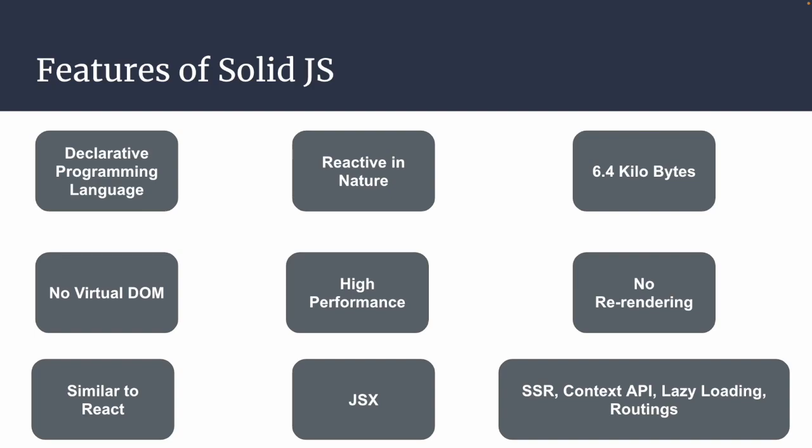SolidJS looks like React in terms of how you write code, and it takes motivation from hooks. There are no class components — only functional components with hook concepts. It has its own hooks that help make applications simple with high performance. It uses JSX, just like React. A function that returns JSX code is called a component — a solid component. It also has server-side rendering, Context API, lazy loading, and routing.